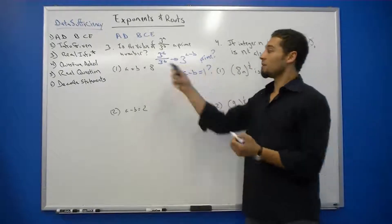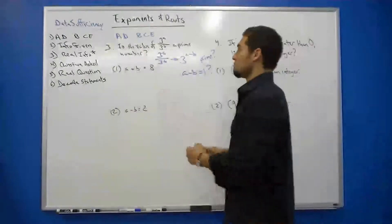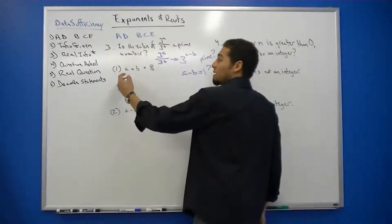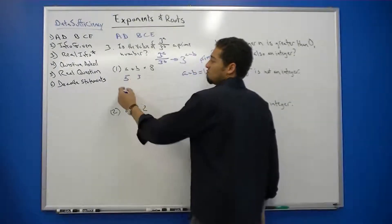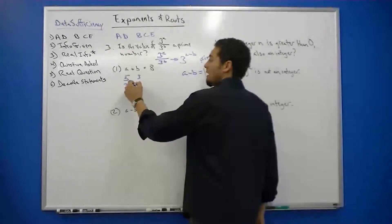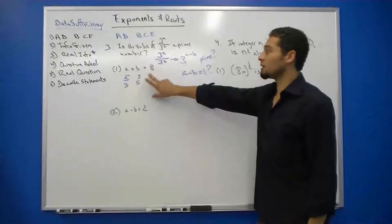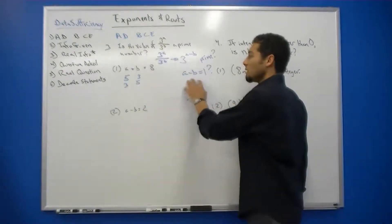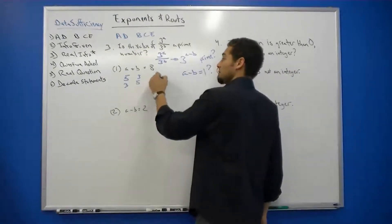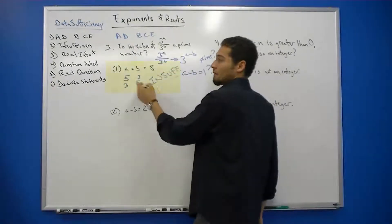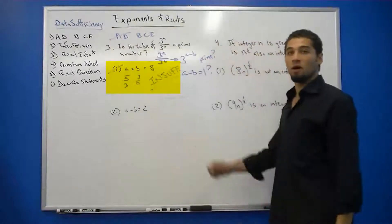Looking at statement 1, we can now decode: A plus B equals 8. For example, A could be 5 and B could be 3, or A could be 3 and B could be 5. There are many other possibilities as well. From this expression, there is no way for us to determine whether A minus B is equal to 1. Insufficient — eliminate statement 1, meaning we eliminate answer choices A and D.